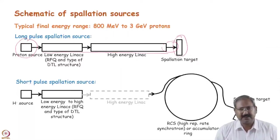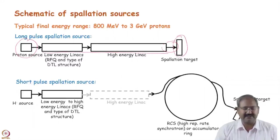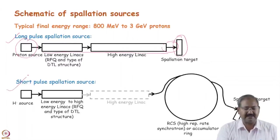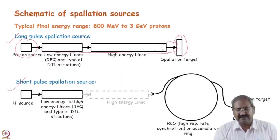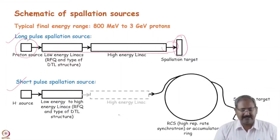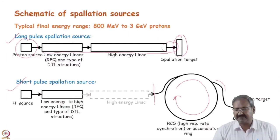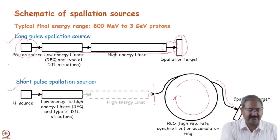There may be two kinds of spallation source based on the accelerator. One is the long pulse spallation neutron source and the other is the short pulse spallation neutron source. In the long pulse spallation neutron source, the protons hit the target directly from the linac. While in the short pulse spallation source, after the linac there is a ring — which may be a synchrotron or an accumulator ring — and after that the protons are ejected from this ring and then hit the target.